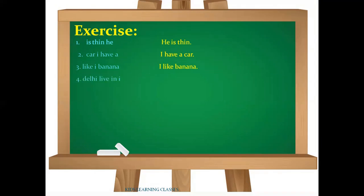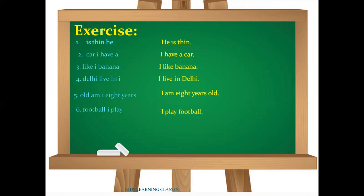Fourth is 'Delhi live in I.' The correct form of the sentence is 'I live in Delhi.' Fifth: 'old am I eight years.' The correct form of the sentence is 'I am eight years old.' Six: 'football I play.' The correct form of the sentence is 'I play football.' Seven: 'write I pen with a.' The correct form of the sentence is 'I write with a pen.'